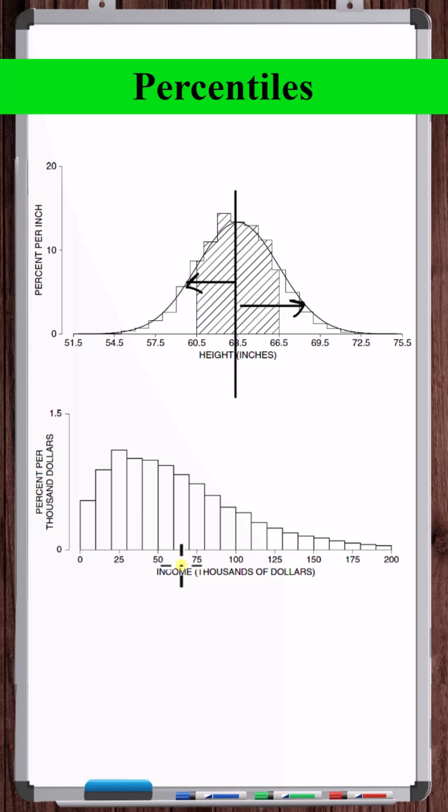So the median income on the histogram, the income right in the middle, would be the 50th percentile because 50% of the data points are below this level of income. $135,000 is the 90th percentile because 90% of the data points are less than or equal to $135,000. And so that's how percentiles work.